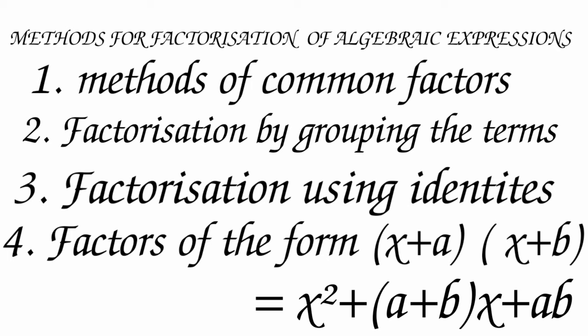Methods for Factorization of Algebraic Expressions: Method 1 - Method of Common Factors. Method 2 - Factorization by grouping the terms. Method 3 - Factorization using identities. Method 4 - Factors of the form (x + a)(x + b) = x² + (a + b)x + ab.